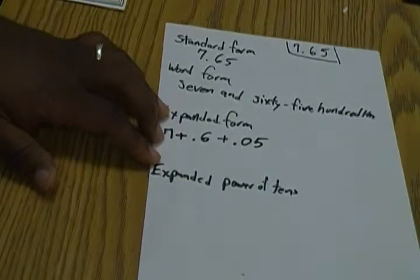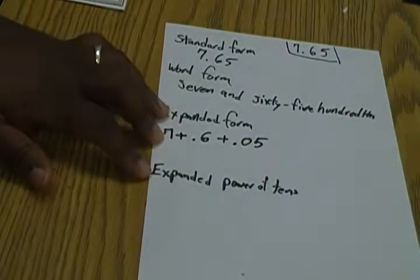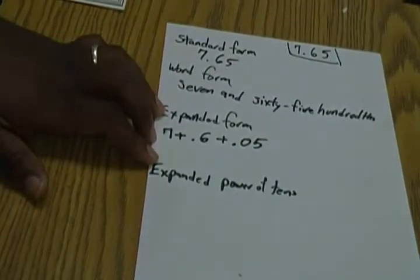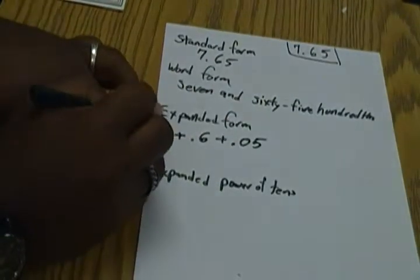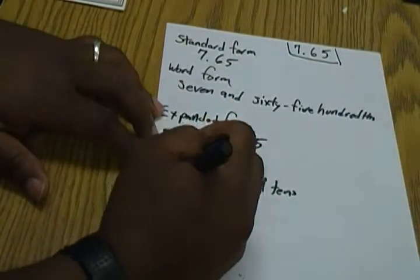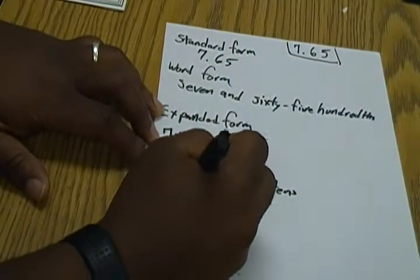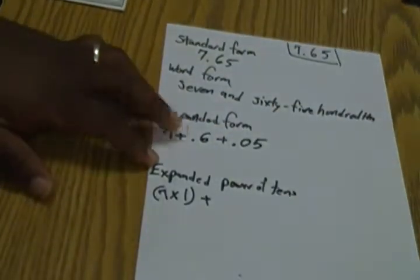And then last but not least, the power of ten. Now this is all about looking at the place value again too, and it's another way of writing the expanded form. So we're looking at the one seven, which is in the ones place, so we're going to do seven times one because it's in the ones place.